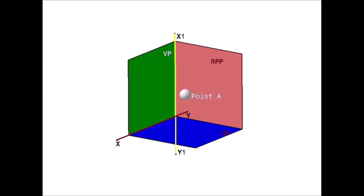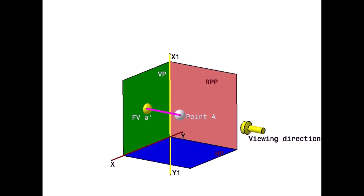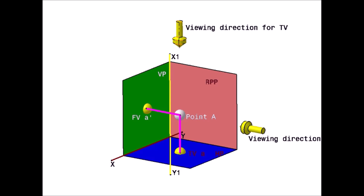When the observer sees the point from the front, the view gets captured on the vertical plane VP, and is called the front view FV, which is denoted by small letter a dash. When the observer sees the point from the top, the view gets captured on the horizontal plane, and is called the top view, denoted by small letter a. When the observer sees the point from the left side, the view gets captured on the right profile plane, and is called the left side view LSV, denoted by small letter a double dash.